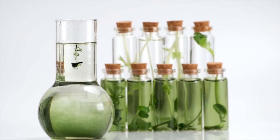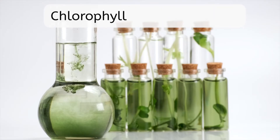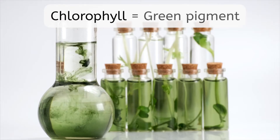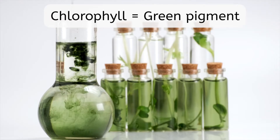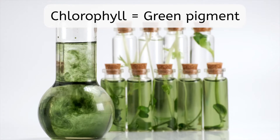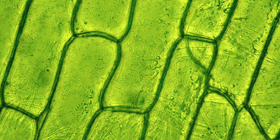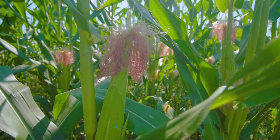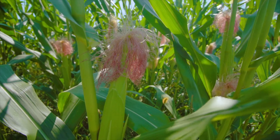Chloroplasts contain a pigment called chlorophyll. Pigments are substances that give color. And I bet you can guess what color chlorophyll is, because what color always comes to mind when we think of plants? Green, of course! Chlorophyll is what makes plants green. It's also what absorbs the energy from sunlight that is needed for photosynthesis. Without it, the cell wouldn't have the energy needed to make its food.